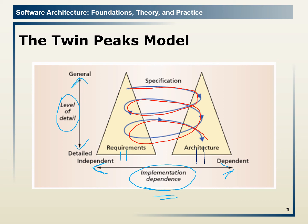You can see that the requirements triangle above is quite narrow, and the architecture triangle is also quite narrow. That's why we say: when the abstraction level of the requirement specification is high, the abstraction level of the corresponding architecture would also be high.